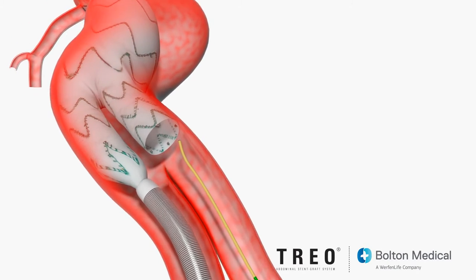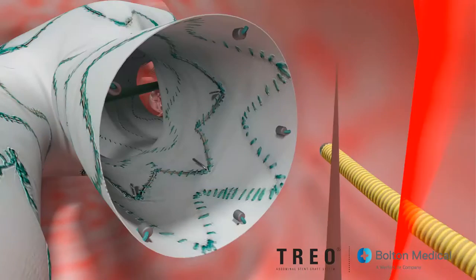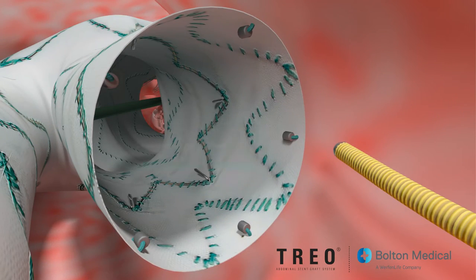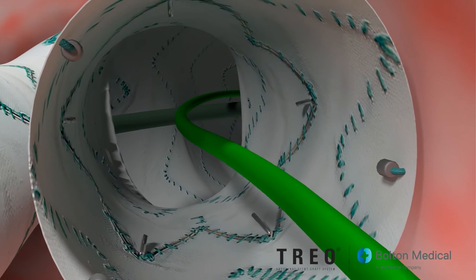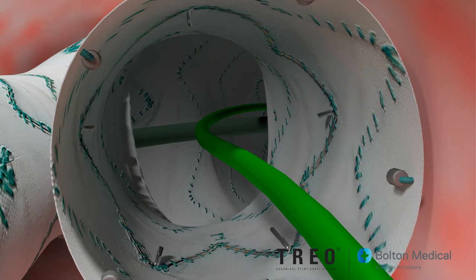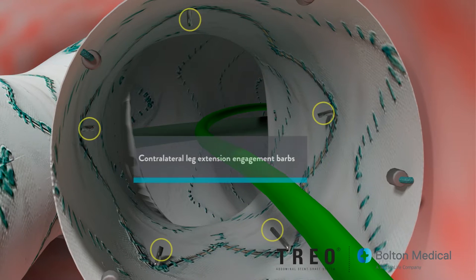Cannulate the contralateral gate and ensure proper placement of a .035-inch guide wire far enough into the main bifurcated stent graft to ensure the end of the leg delivery system tip does not go beyond the end of wire during deployment. Ensure that the guide wire does not go between the bare stent and the arterial wall.